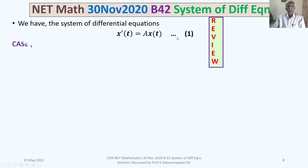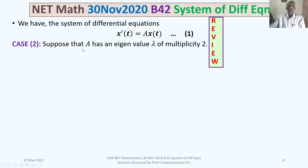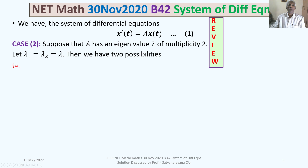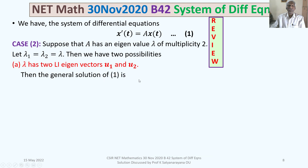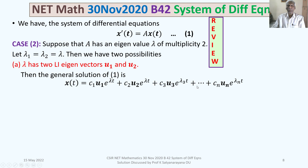We continue reviewing. Case 2: Suppose A has an eigenvalue λ of multiplicity 2, so λ1 = λ2 = λ. Then there are two possibilities. First possibility: λ has two linearly independent eigenvectors u1 and u2 — then the general solution is x(t) = c1·u1·e^(λt) + c2·u2·e^(λt) + c3·u3·e^(λ3·t) + ... + cn·un·e^(λn·t).